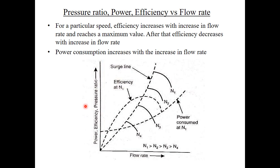From the performance characteristic curves of an axial flow compressor, for a particular speed, efficiency increases with increase in flow rate, reaches a maximum, then decreases. Power consumption increases with increase in flow rate. A dotted surge line is visible on the graph. To understand the surge line completely, you need to understand surging and choking, which will be studied in detail in upcoming slides. The surge line is obtained by joining all surge points.